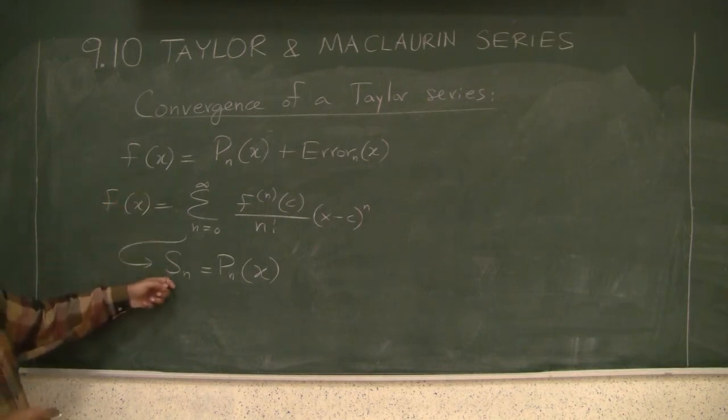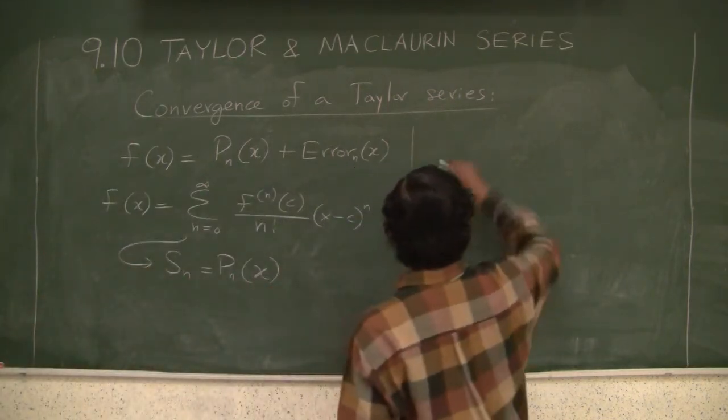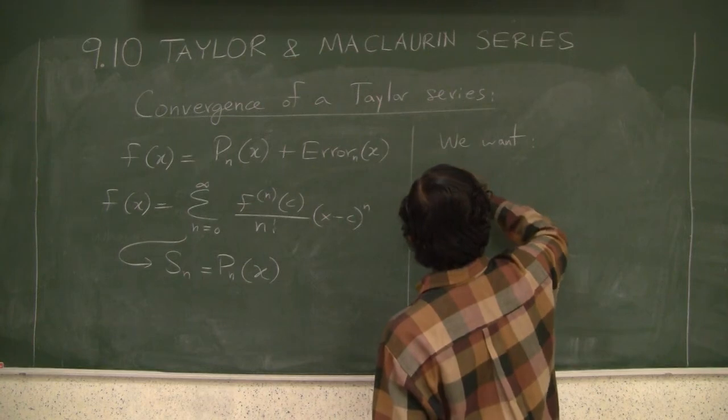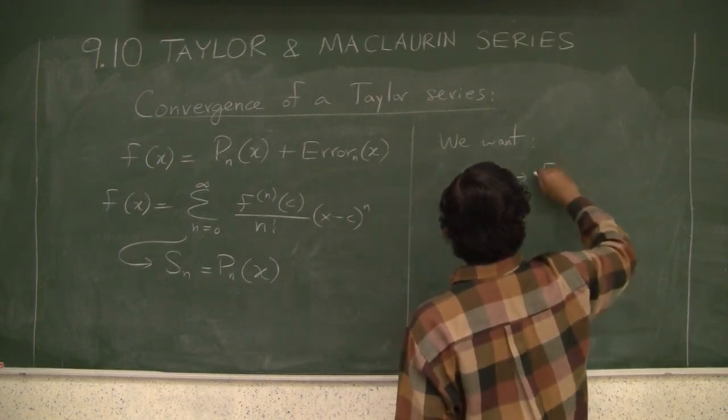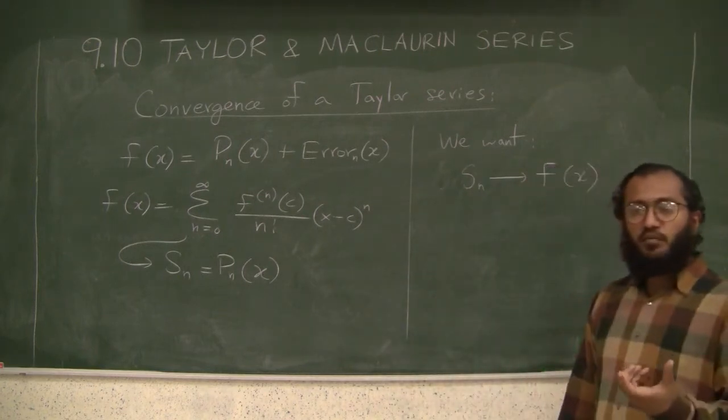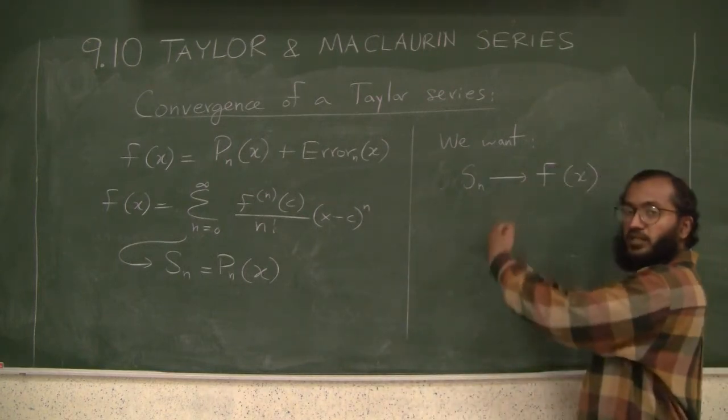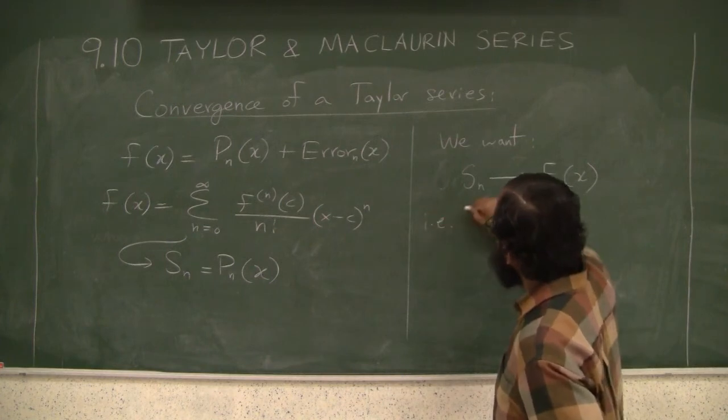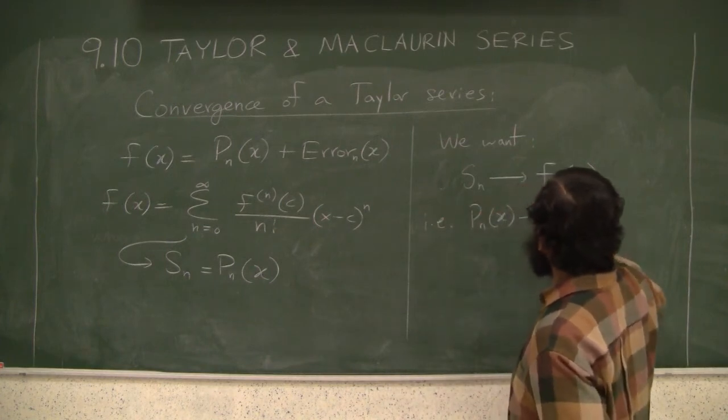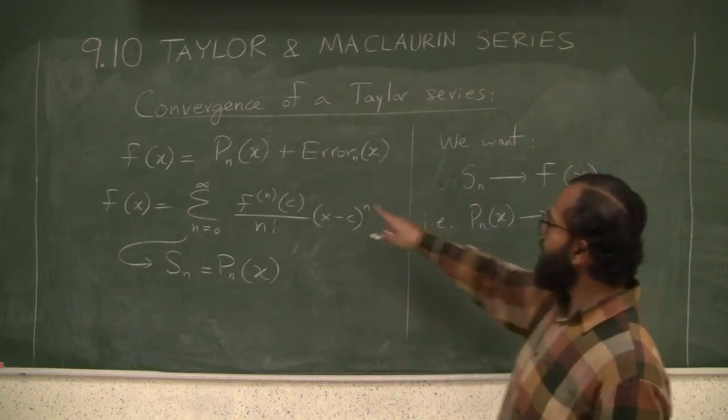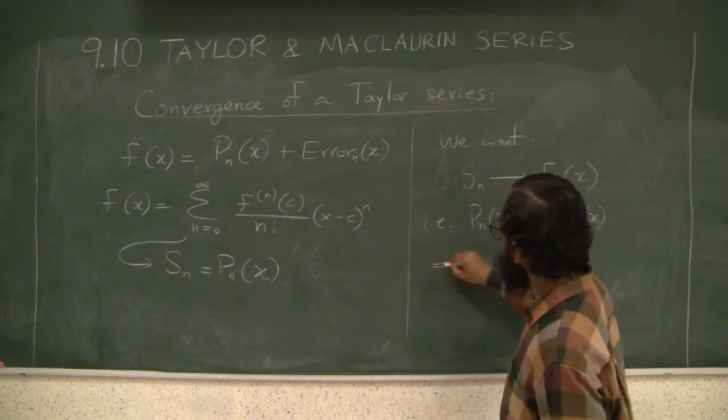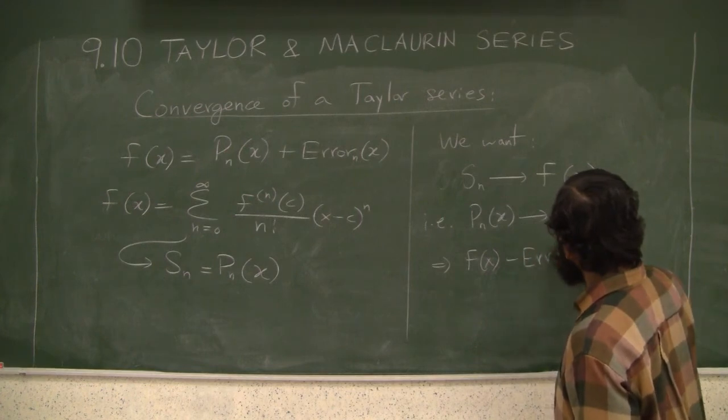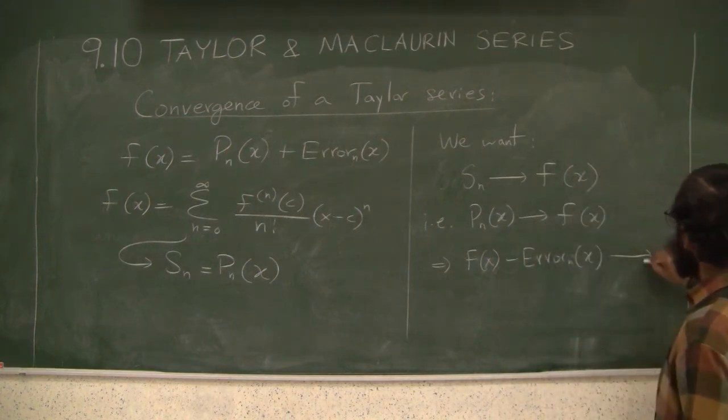What is it that we want? We want the S_n to converge to f of x. This is by definition of what does it mean for a series to converge. The nth partial sum should be converging. If we want these to converge, now, what is S_n? We want P_n of x to converge to f of x. But what is P_n of x? P_n of x is f of x minus the error term. We want all this to converge to f of x.